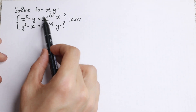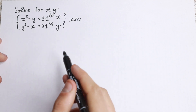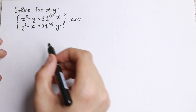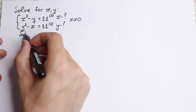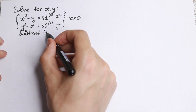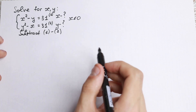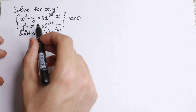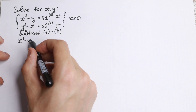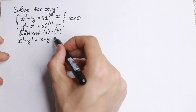Let's call the first equation 'equation 1' and the second 'equation 2'. What trick are we going to use here? Let's subtract — first equation minus second equation. What we'll have is x squared minus y squared, plus x minus y, equal to zero.